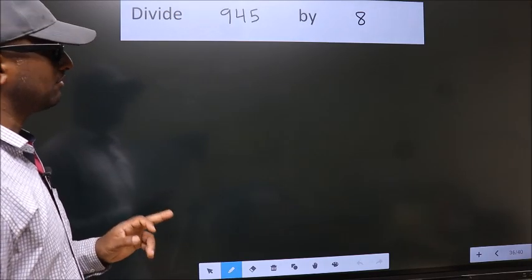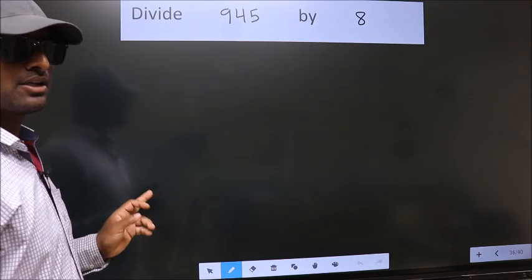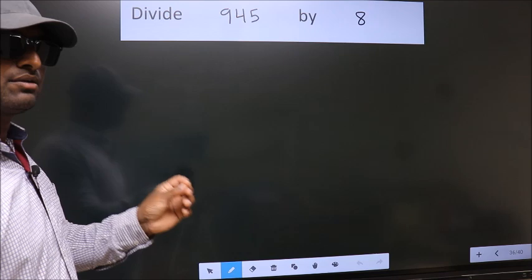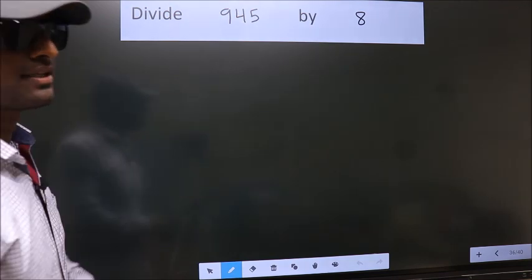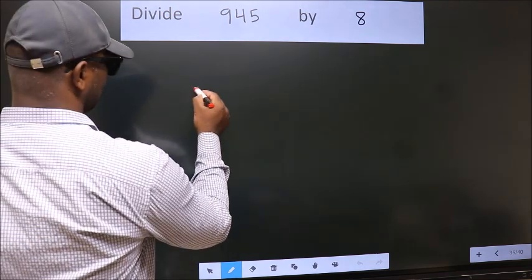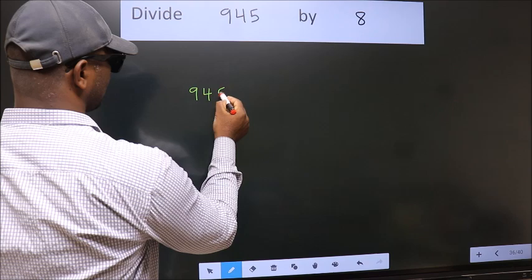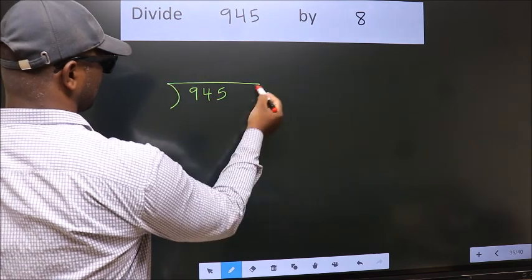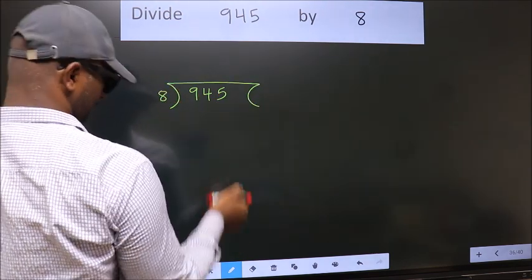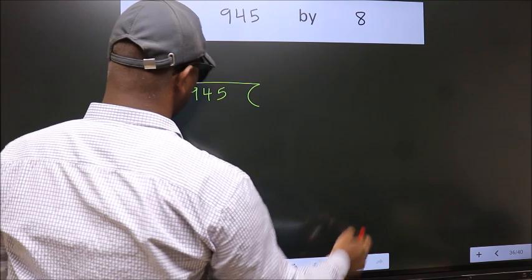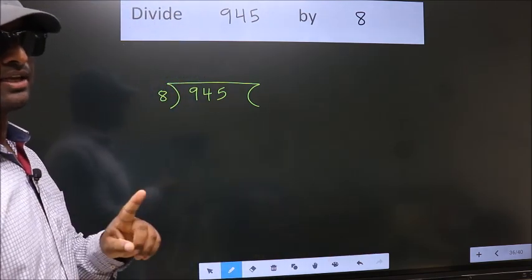Divide 945 by 8. To do this division, we should frame it in this way: 945 here, 8 here. This is your step 1.